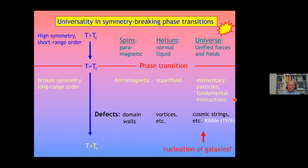At very high temperature, shortly after the Big Bang, all forces and fields were unified. That came a series of phase transitions leading to the elementary particles and fundamental interactions as we see them today. There can also be defects, for example, cosmic strings introduced by Kibble.